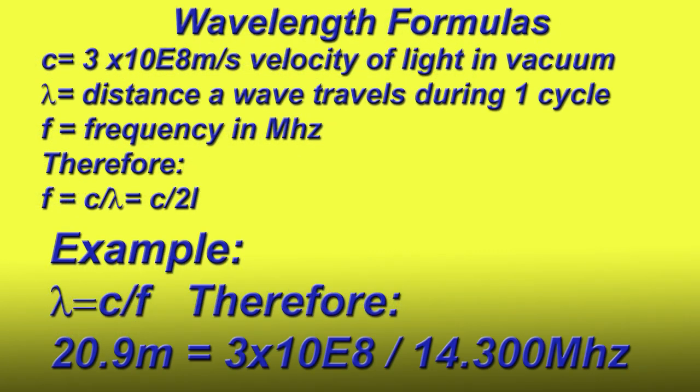So the long story short, this is the formula for figuring out wavelength. If wavelength is equal to lambda, basically c is the velocity of light in a vacuum. Lambda is the distance a wave travels during one cycle, and f is equivalent to frequency. Therefore, f equals c over lambda.